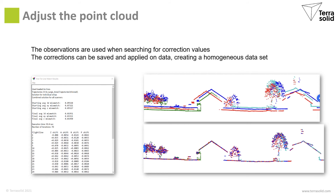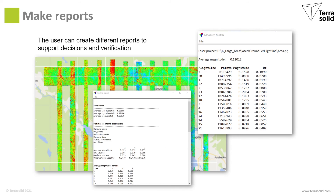After the adjustment the goal is to get a homogeneous laser point cloud. TerraMatch and TerraScan offer a number of tools to create reports. You can make a colour-coded picture of the mismatches. You can also make statistical reports of the mismatches or the control points.